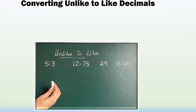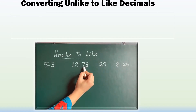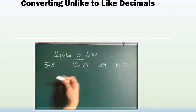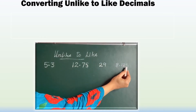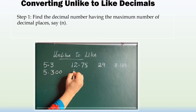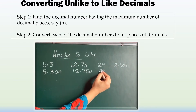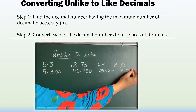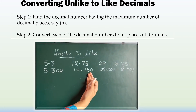Numbers with the same number of decimal places are called like decimals. Here, the 4 numbers are unlike — one has 1 decimal digit, another has 2, one has no decimal place, and one has 3. The maximum number of decimal places is 3, so let's make all numbers have 3 decimal places by adding zeros at the end. For the whole number with no decimal part, put a point and add 3 zeros. Now all unlike decimals have been converted to like decimals, each with 3 decimal places.